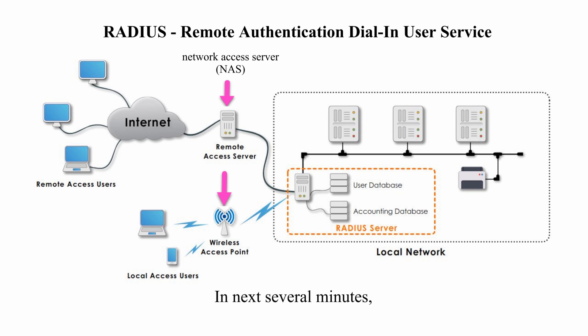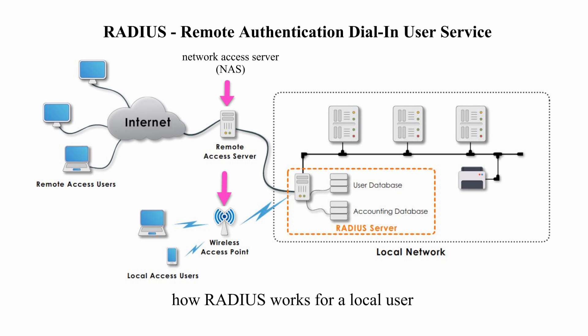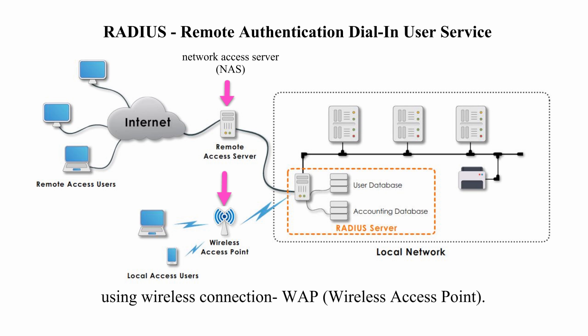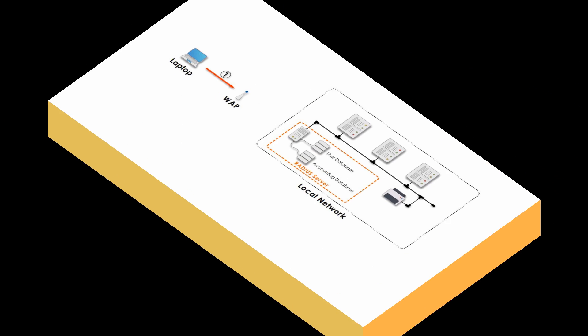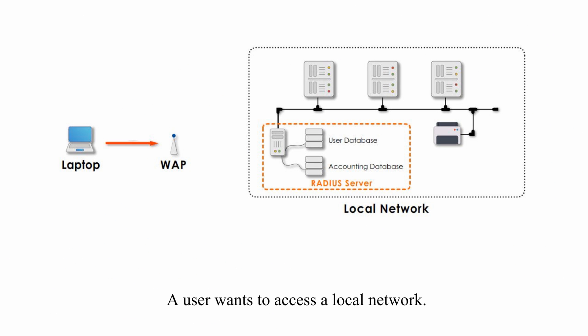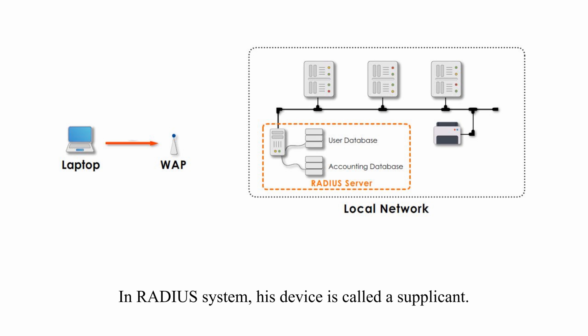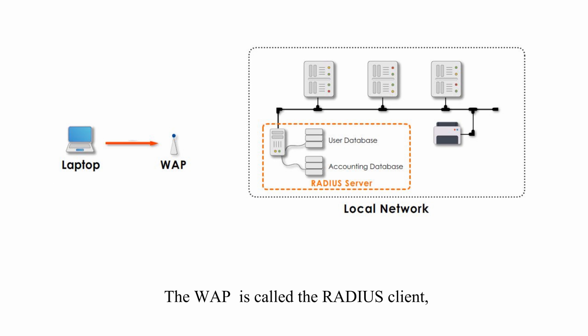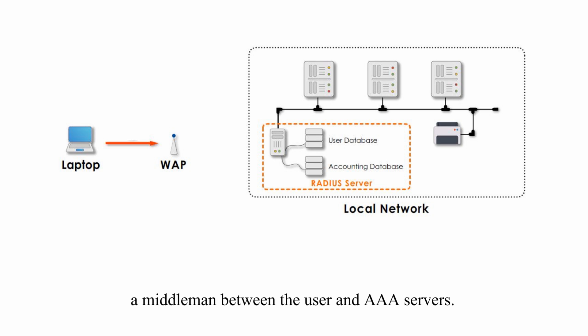In the next several minutes, I will use an example to demonstrate how RADIUS works for local users using a wireless connection — WAP, or wireless access point. Here is the scenario: a user wants to access a local network. In the RADIUS system, his device is called a supplicant. The WAP is called the RADIUS client, a middleman between the user and AAA servers.